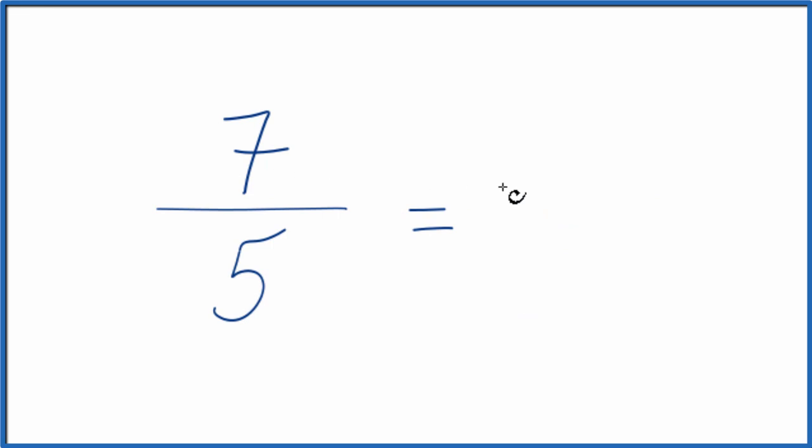So 5 goes into 7 one time. 1 times 5, that's 5. And then we'd have 2 left over. We bring the 5 across. 7 fifths, this improper fraction, that equals the mixed number 1 and 2 fifths.